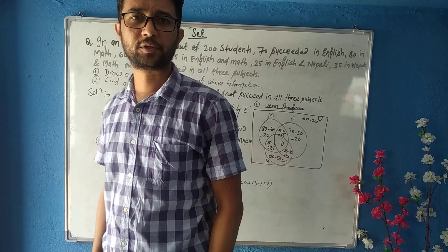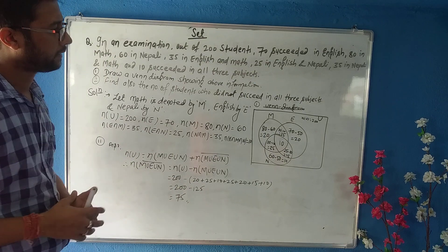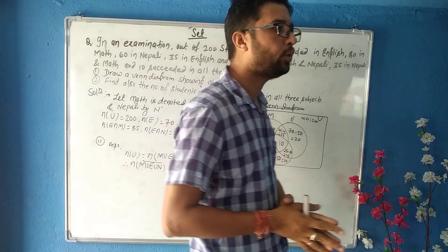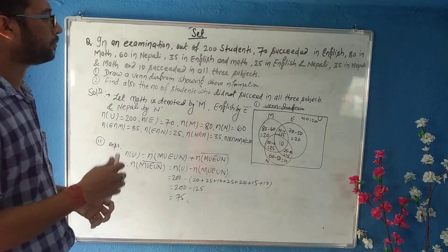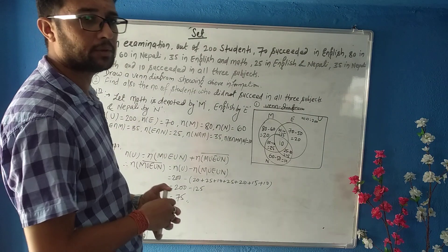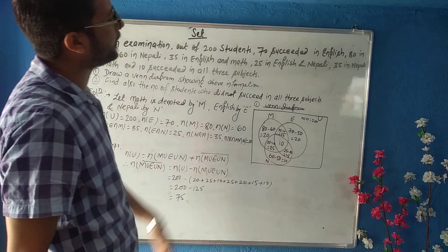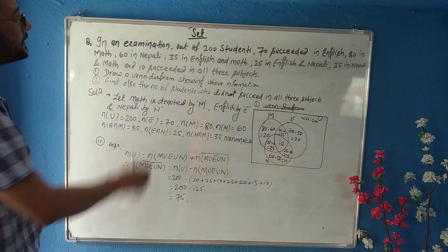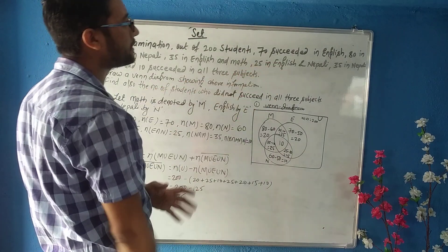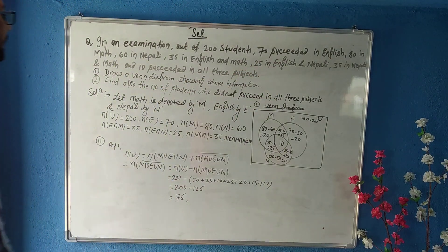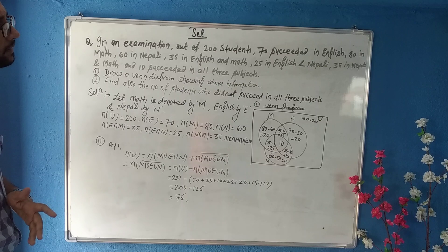Hello my dear friends, it's me Roshan Thakura. Today we are going to learn further about sets. In an examination out of 200 students: 70 succeed in English, 80 in math, 60 in Nepali, 35 in English and math, 25 in English and Nepali, 35 in Nepali and math, and 10 succeed in all subjects. Draw a diagram showing the above information.